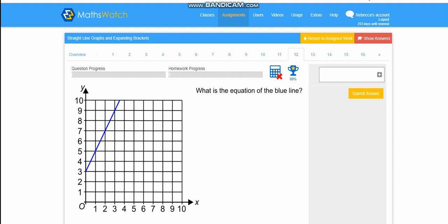Okay, year 8, so the final kind of question that you could be asked on this Maths Watch assignment is to find out the equation of a line given on a graph.